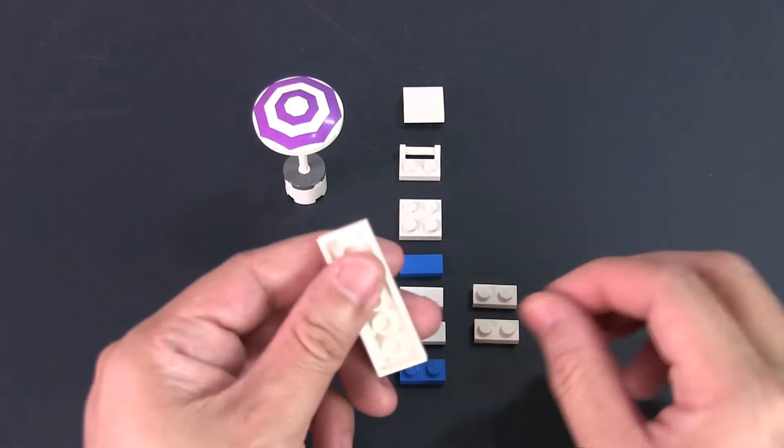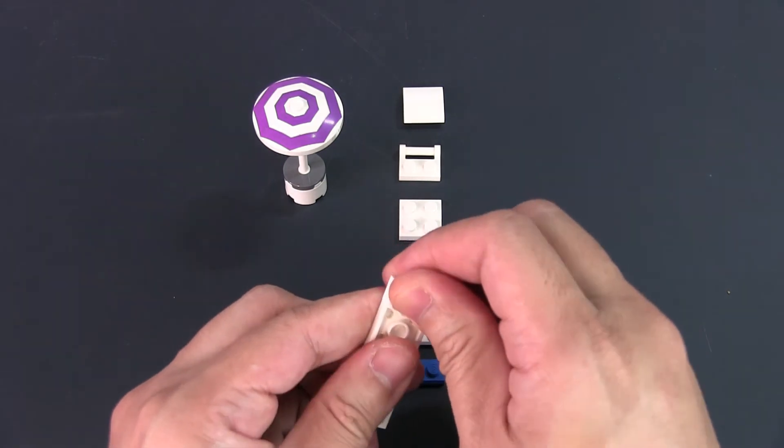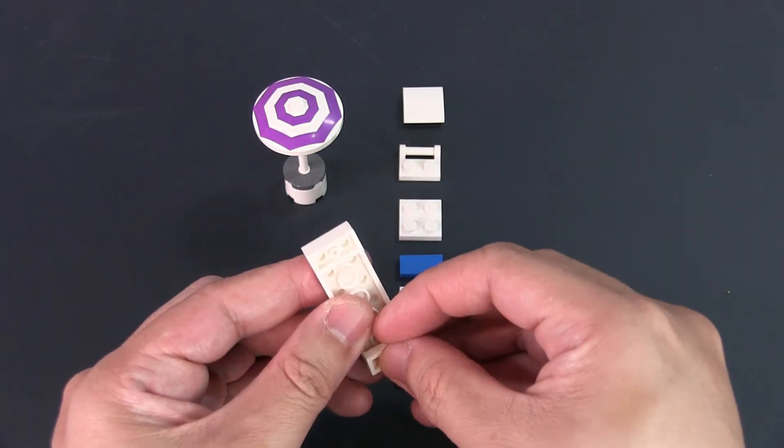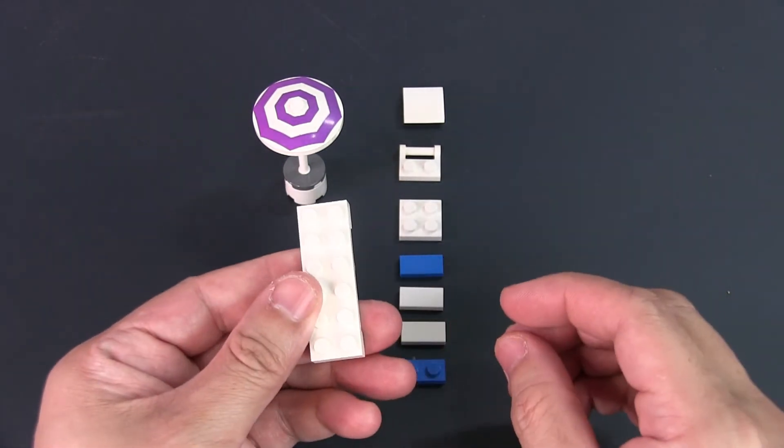For the chair, take the 2x8 plate and place the two 1x2 white plates under it on both ends. These act as the legs for the beach chair.